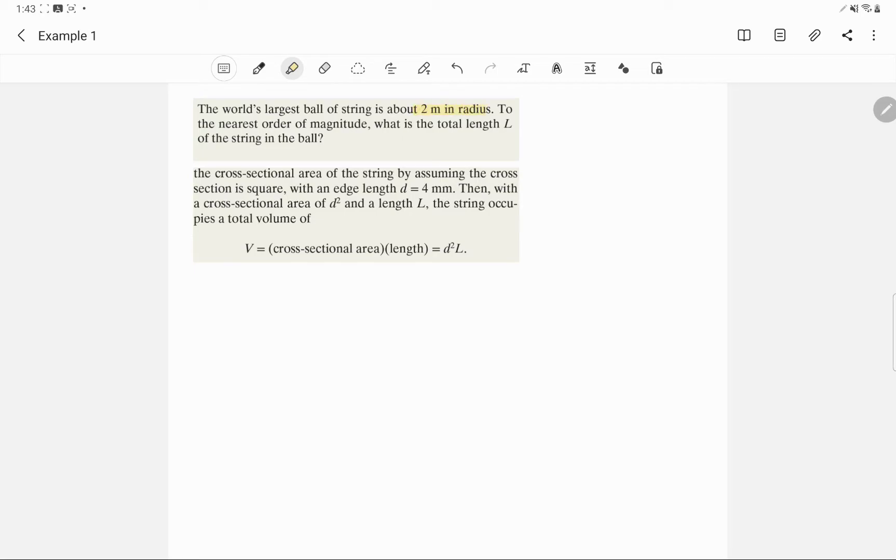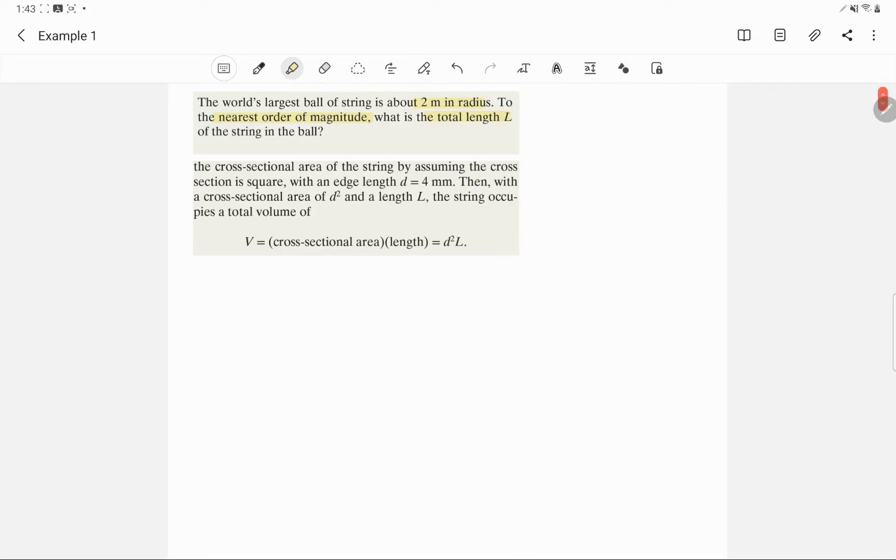So we're given 2 meters in radius and we want to find the total length. Something else to keep in mind for this problem is that we are only concerned with accuracy to the nearest order of magnitude. And something that's a little bit confusing in the textbook is only in the explanation are you told to make the assumption that the edge length of the string is 4 millimeters. And I feel like that's crucial to the problem. So if you were trying to do it without that piece of information, I wouldn't worry about it. Usually in a test situation or otherwise that would be given.